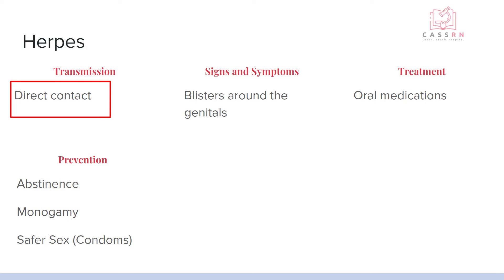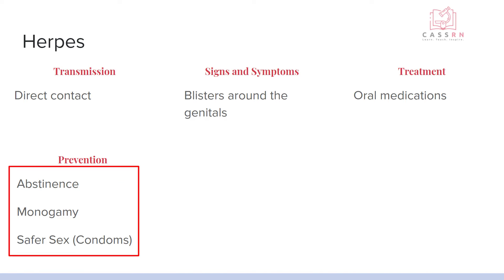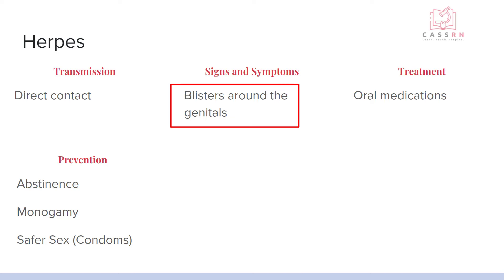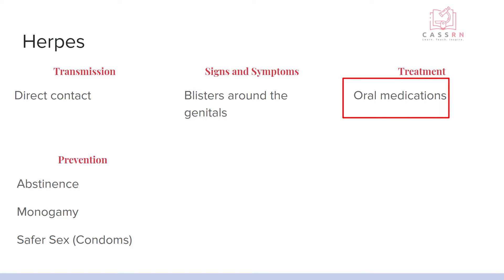Herpes is direct contact — basically cold sores. There are two types: type one is usually around the lips, type two is around the genitals, but they can be transmitted during oral sex. Prevention is abstinence, monogamy, and safer sex with condoms. The signs and symptoms are blisters around the mouth or genitals, and treatment is oral medications.